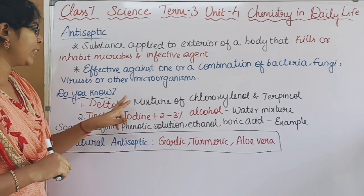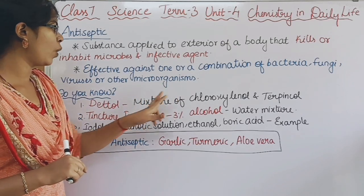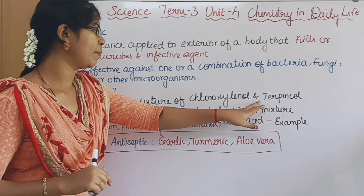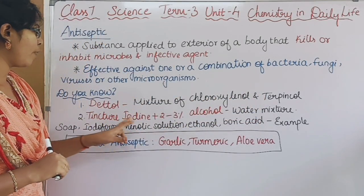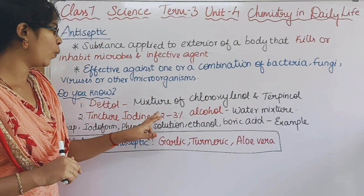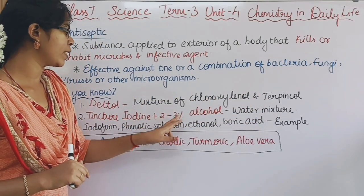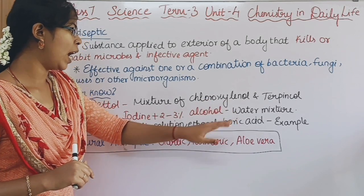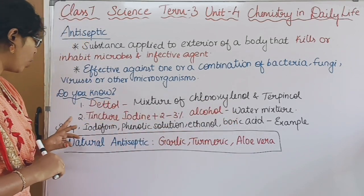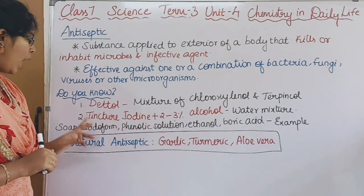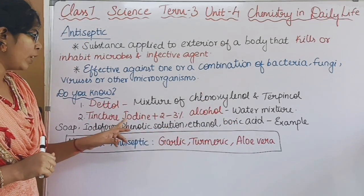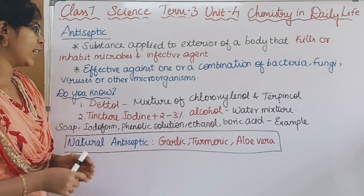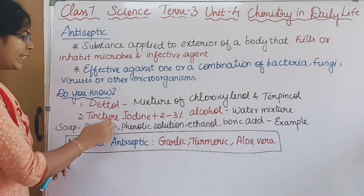This substance is a mixture of chloroxylenol and terpene, along with iodine plus 1–23% alcohol. It is a water mixture. Other examples are soap, iodofoam, phenolic solution, ethanol, and boric acid. These are chemicals.